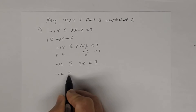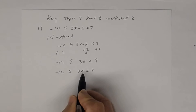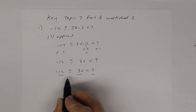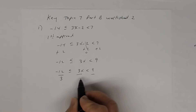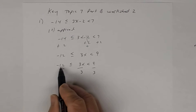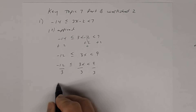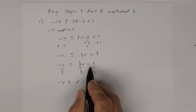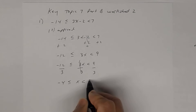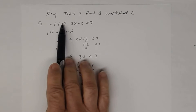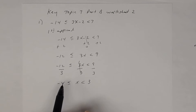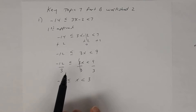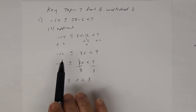The next step to get x by itself — right now you're multiplying by 3 — is to divide all three parts by 3. So negative 12 divided by 3 is negative 4, less than or equal to x, because 3 divided by 3 is 1. And that's less than or equal to 9 divided by 3, which is 3. So the solution to this compound inequality is negative 4 ≤ x < 3.